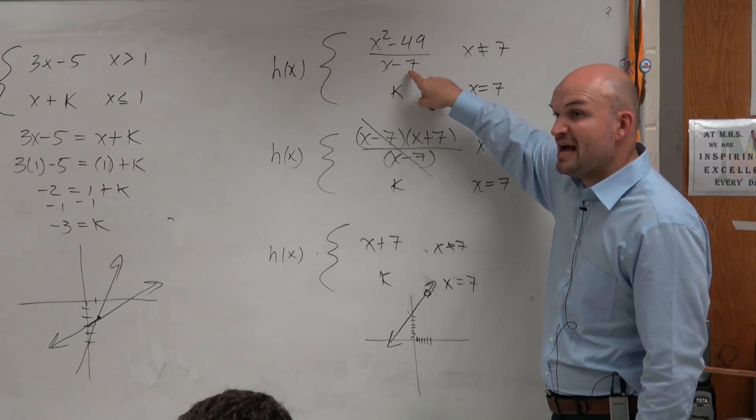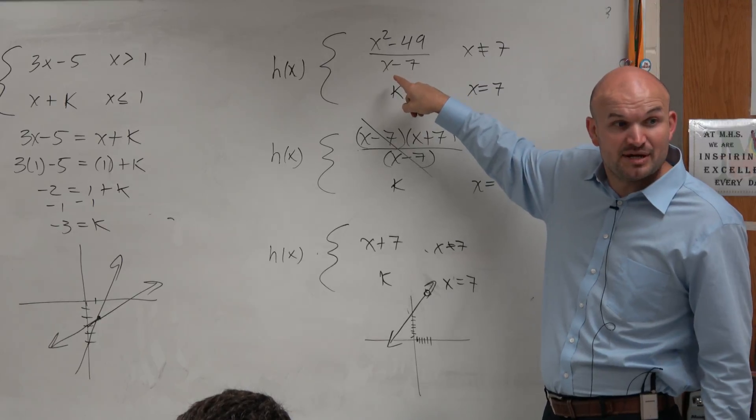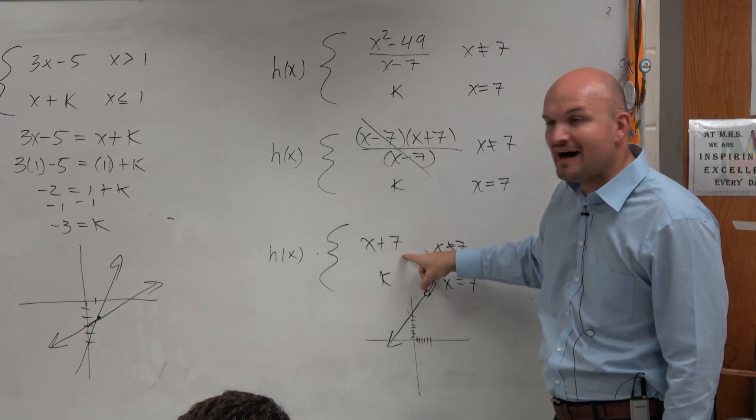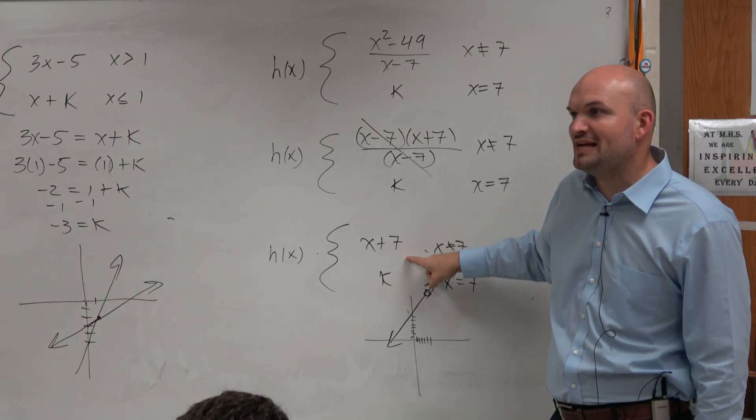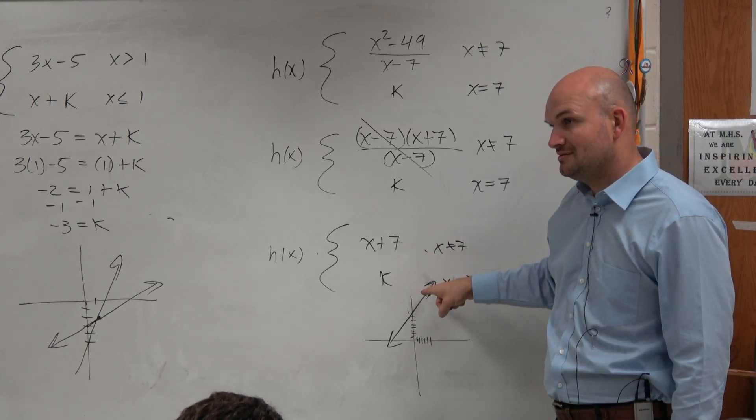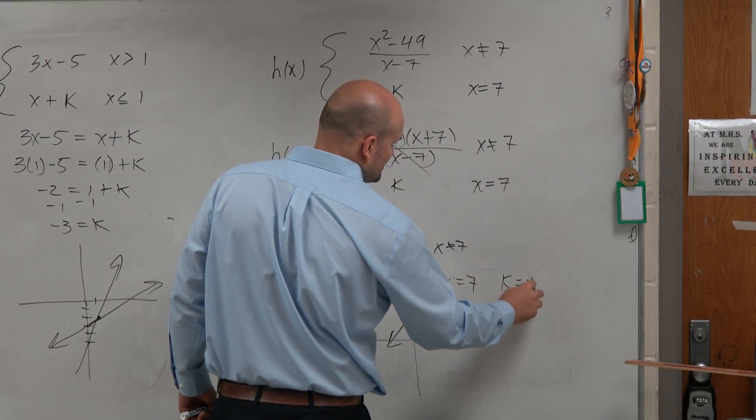can you plug in 7 into this equation and have it be defined? Can you plug 7 in there? No, because it makes the denominator 0. However, once you simplify it, can you now plug in 7? Yes. And what value do you get for k that would plug in that hole? 14. So k equals 14.